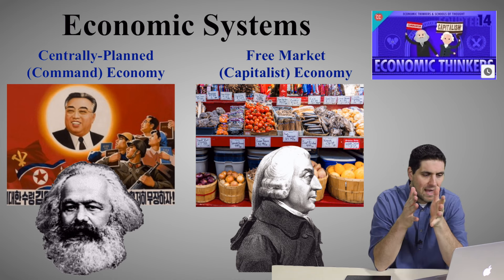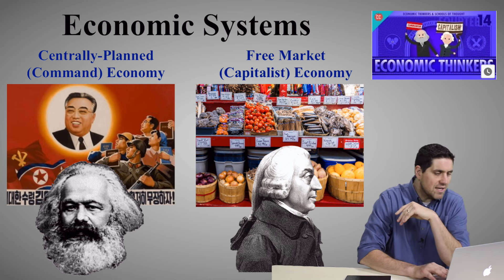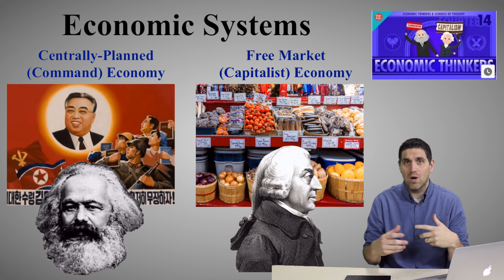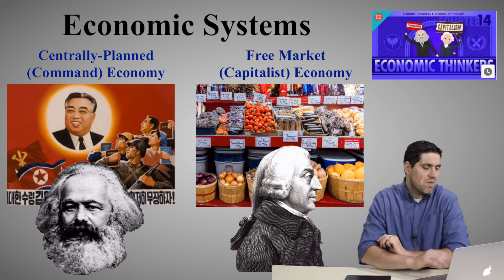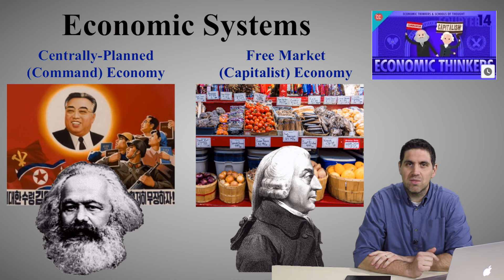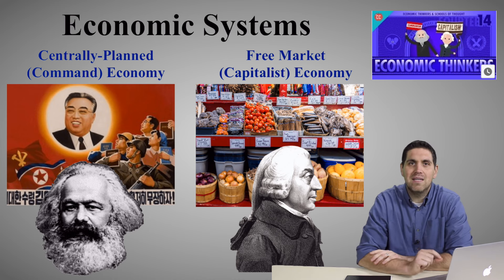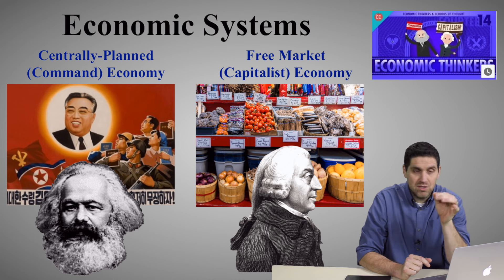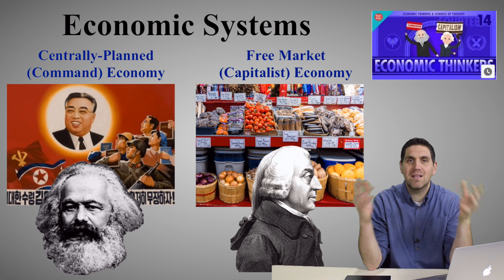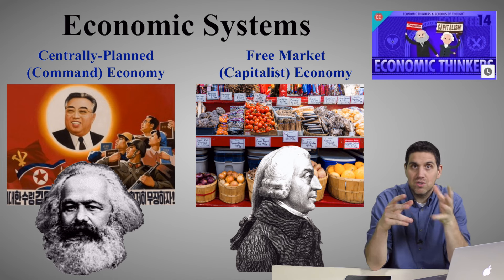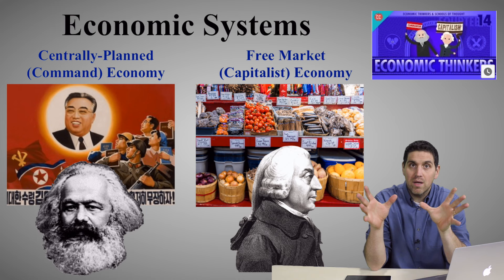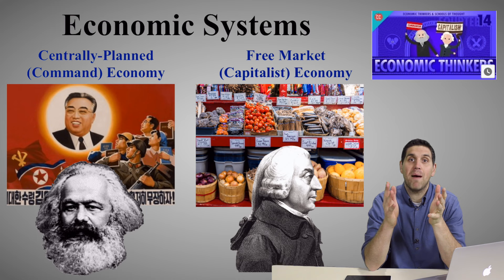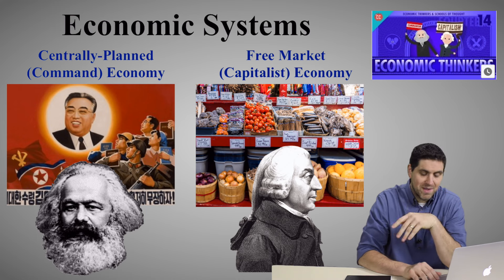There are two main types: centrally planned and free market economies. The centrally planned economy is one where the government owns all the resources, basically telling workers where they can work and what jobs they should have. The basic ideas came from Karl Marx. Free market, or capitalist, economies come from the idea of Adam Smith, who basically said: let individuals decide what to produce, how to produce it, and who gets it — let the market do it all. That's called capitalism.